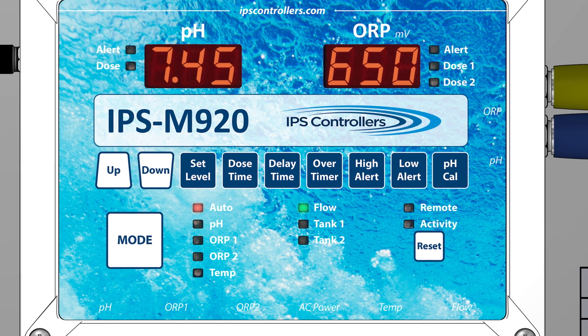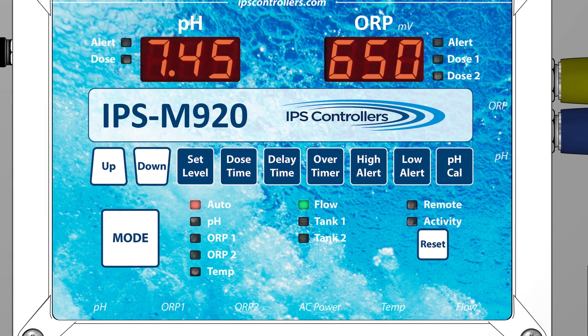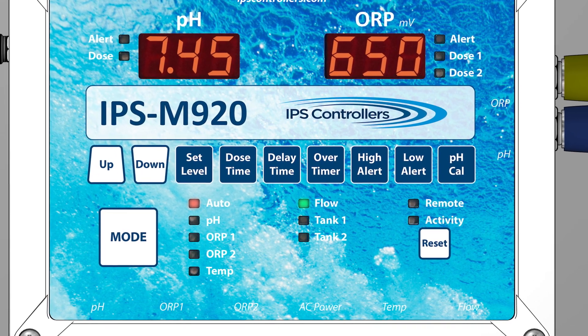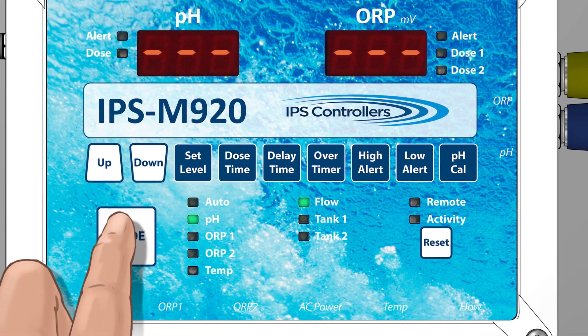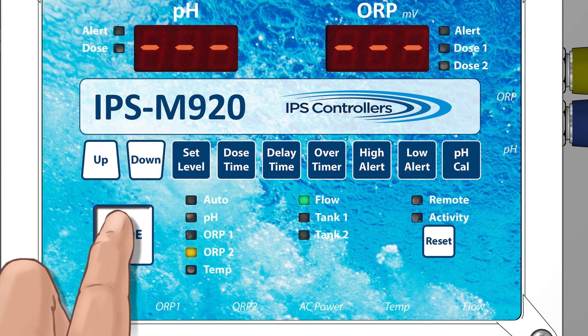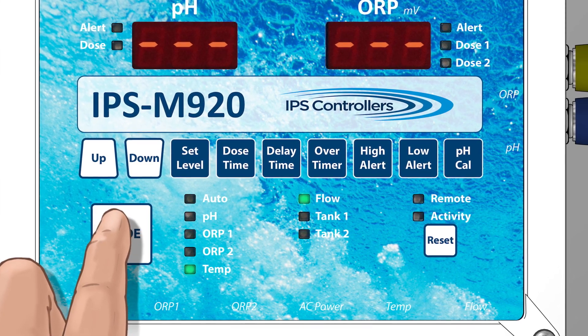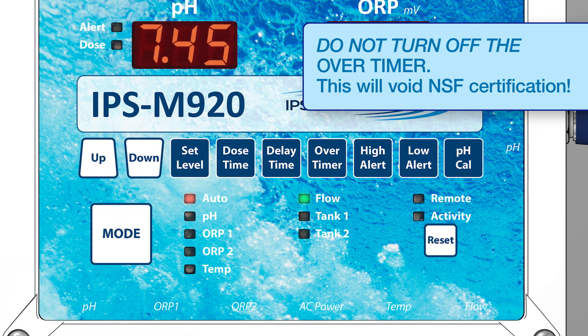To reset the system, press the Mode button to cycle through Auto, pH, ORP1, ORP2, and Temp, then back to Auto. Do not turn off the Over Timer.